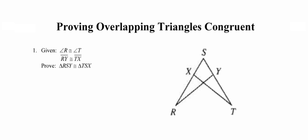So in number one, I'm going to ignore the givens for a moment and focus instead on the two triangles that we're trying to prove congruent. We're trying to prove that triangle RSY — the one outlined in red — is congruent to triangle TSX — the one outlined in blue. What I want you to notice is that these triangles overlap one another; the blue one sits on top of the red one.